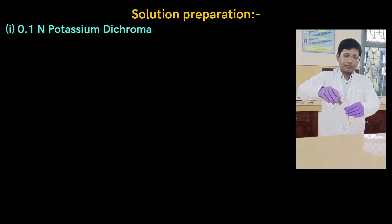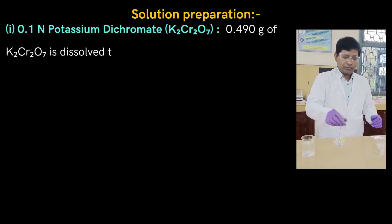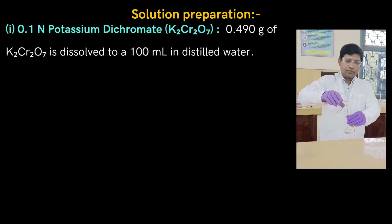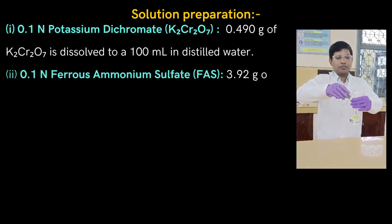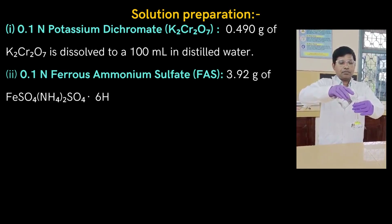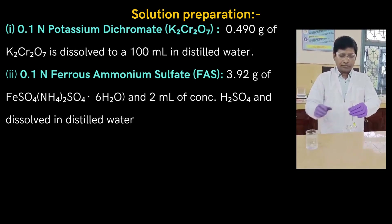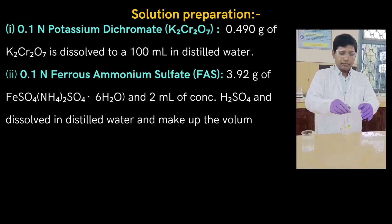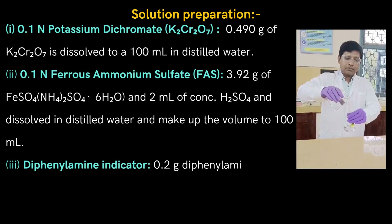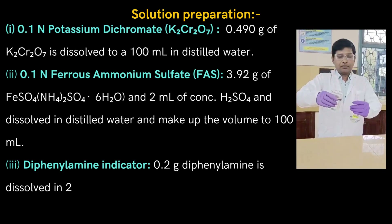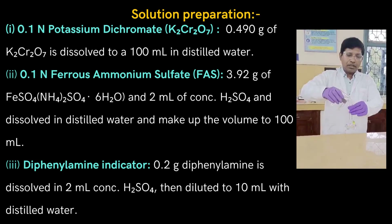Next we will see the solutions for this titration. First, 0.1 Normal potassium dichromate is prepared by dissolving 0.490 g K2Cr2O7 in 100 ml distilled water. Second, 0.1 Normal ferrous ammonium sulfate is prepared by dissolving 0.392 g in 2 ml of concentrated H2SO4, then dissolved in distilled water and made up to 100 ml. Third, diphenylamine indicator: 0.2 g diphenylamine dissolved in 2 ml concentrated H2SO4, then diluted to 10 ml with distilled water.